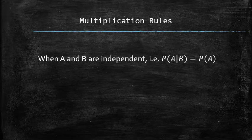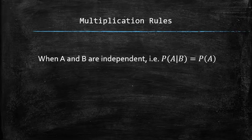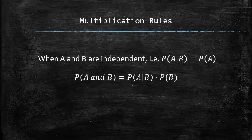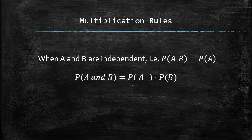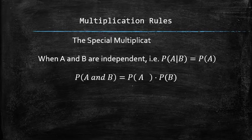When A and B are independent — in other words, when the probability of A given B is the same as the probability of A — in the general multiplication rule, we can replace the probability of A given B with the probability of A to get the special multiplication rule. What makes it special is the fact that it can only be applied for two independent events.